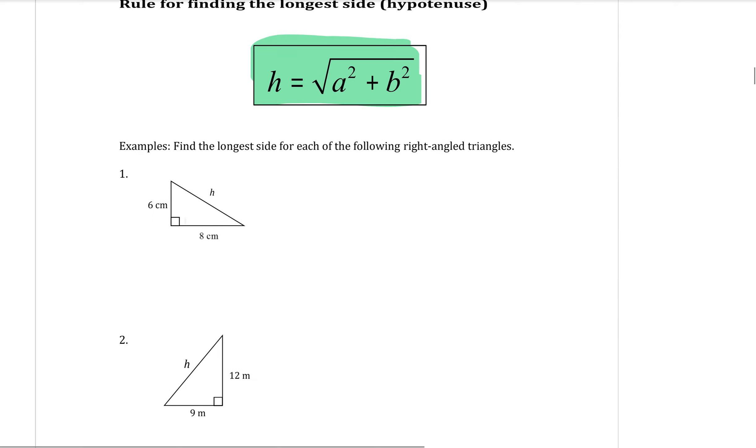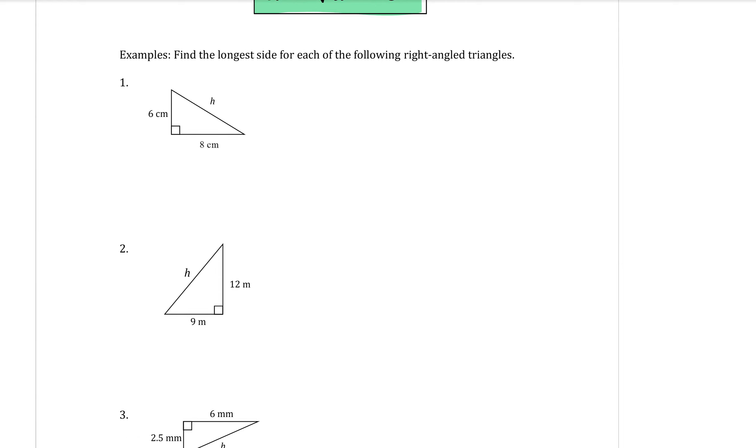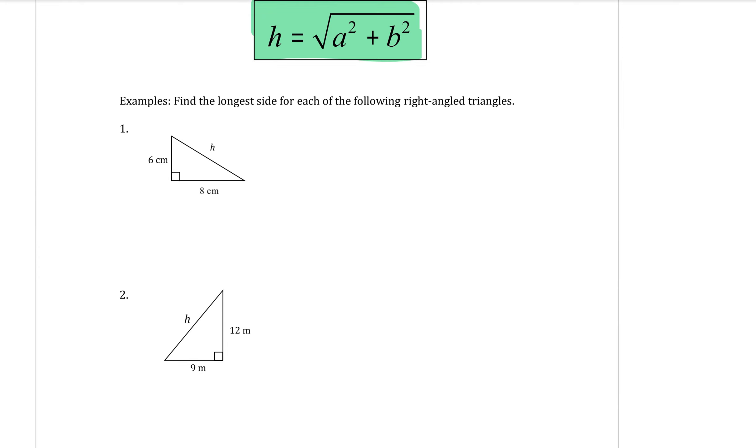So to use the formula, in all of these examples down here, we're finding the hypotenuse. Okay, so all we need to do is work out what a and b is. Now, if the right angle is here, a and b are these two shorter sides.